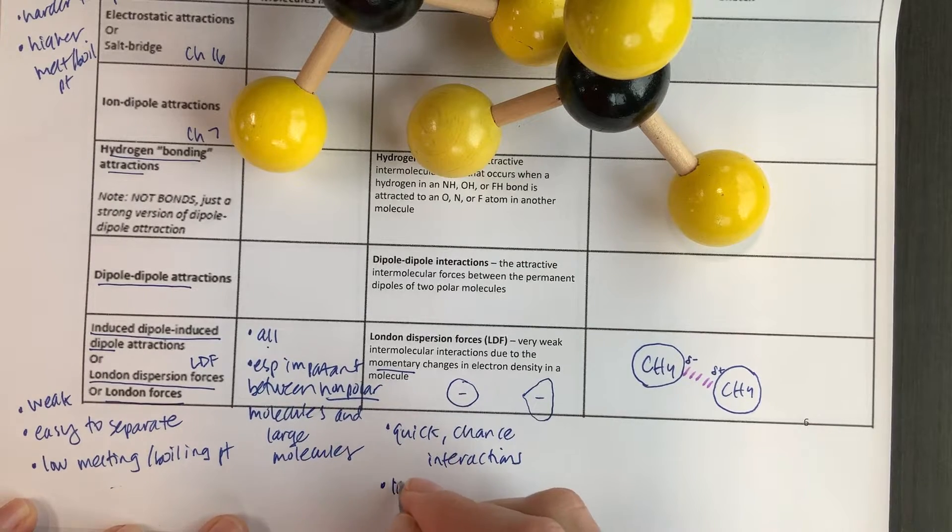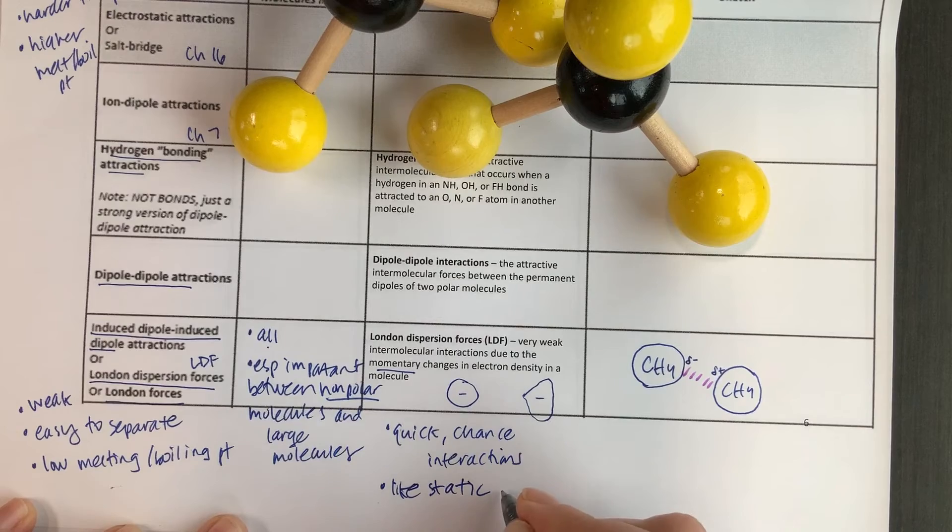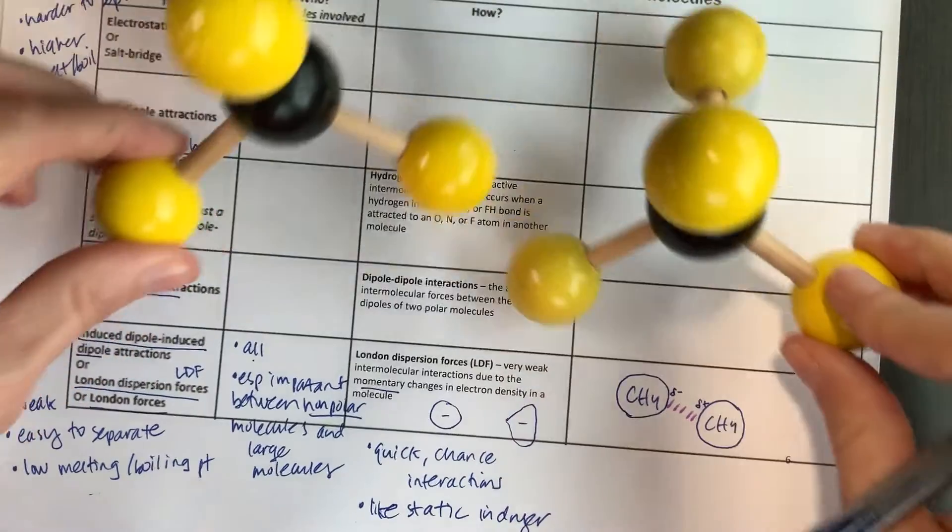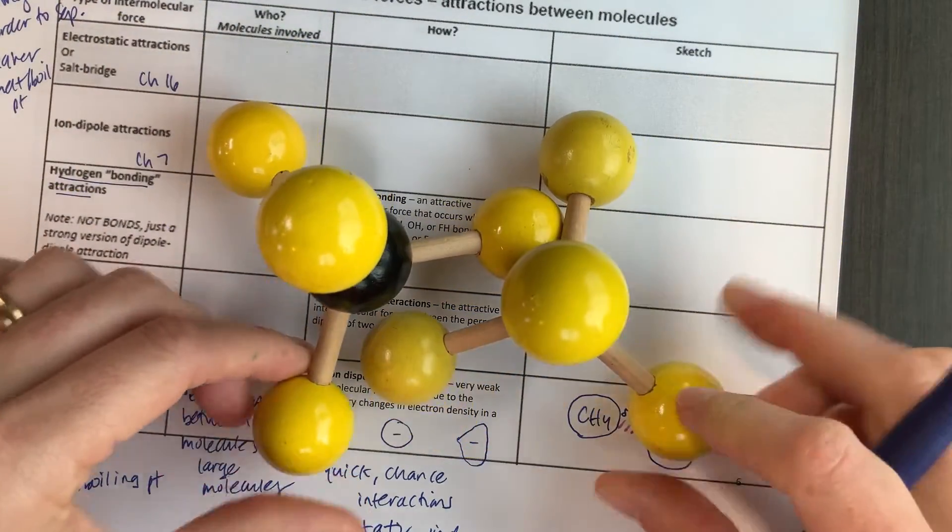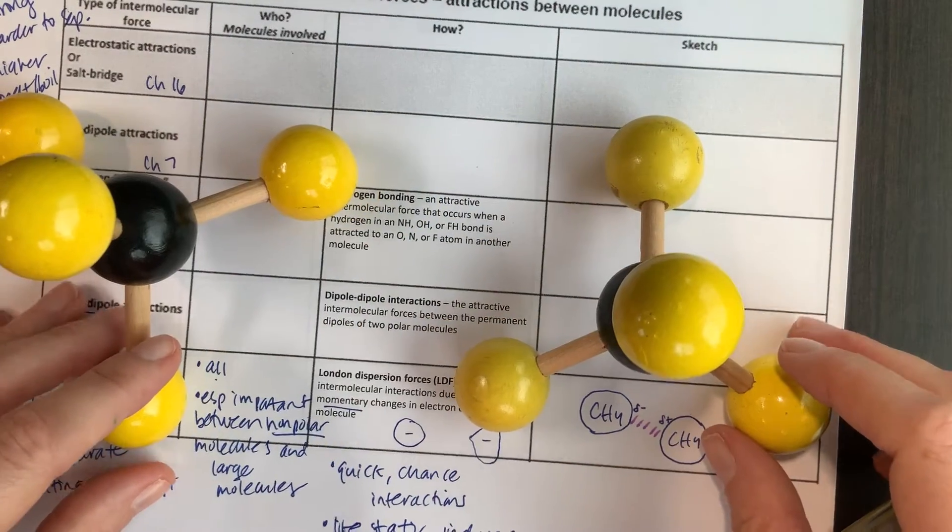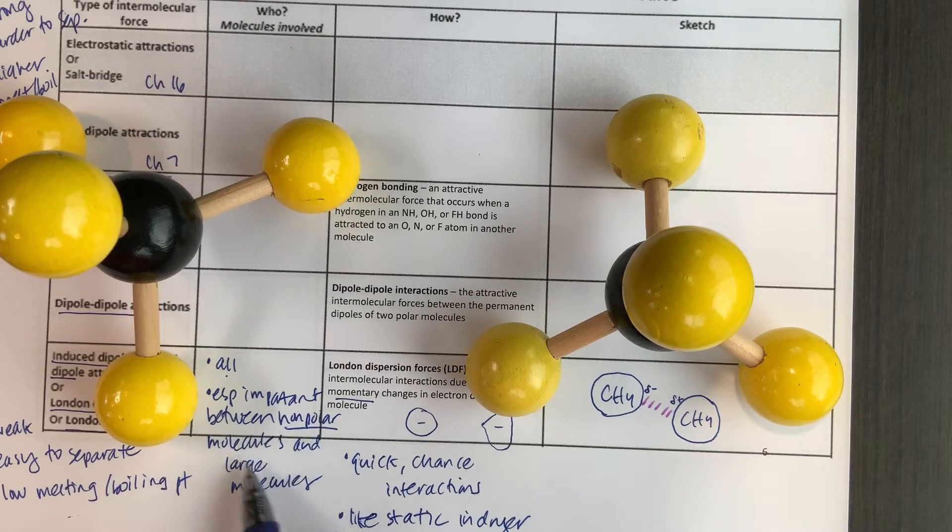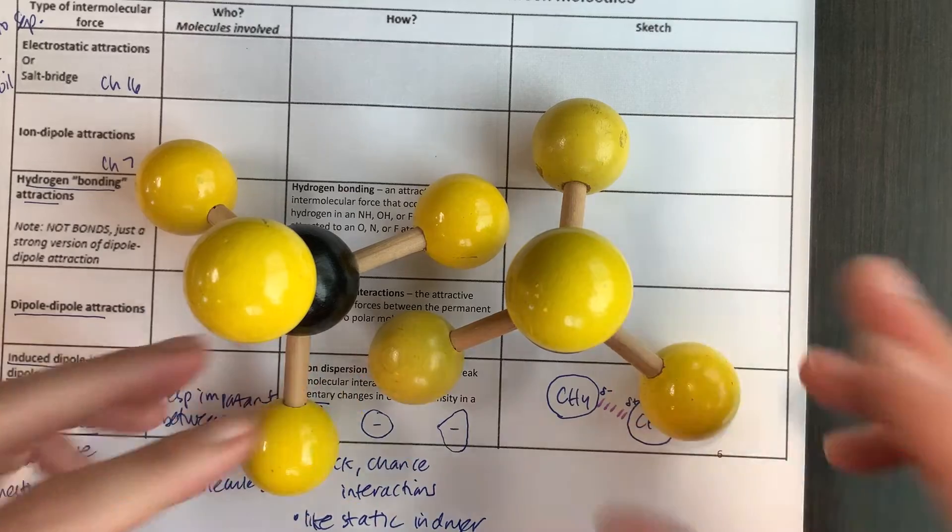And so one way to describe this, where we see something a lot like this in our everyday life, is this is basically like a temporary static attraction that you get when you put your clothes in the dryer. So if I take sheets and sweaters and I collide them and I collide them, eventually sometimes they'll stick for a little while, but then they fall back apart. And the bigger you are, remember large molecules have a lot of these dispersion forces. The bigger you are, the higher the chance that you're going to stick together for a moment.